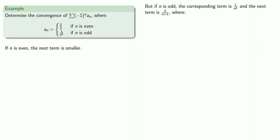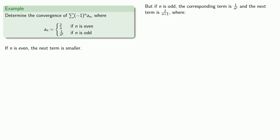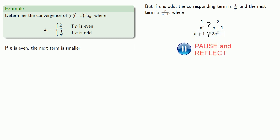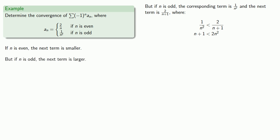If n is odd, the corresponding term is 1/n² and the next term is 2/(n+1). Again we leave the inequality unstated and do the algebra. Cross-multiplying, we ask what is the relationship between n+1 and 2n² for n sufficiently large. We see that eventually 2n² is greater than n+1, so 1/n² is less than 2/(n+1). So if n is odd, the next term is larger.